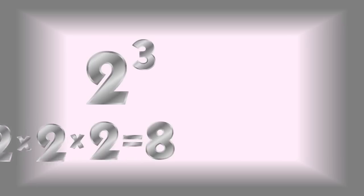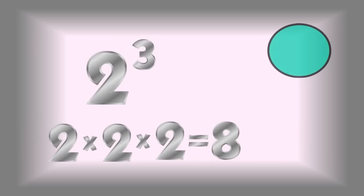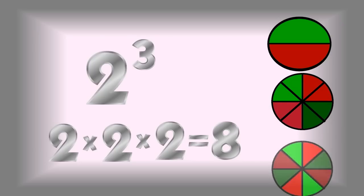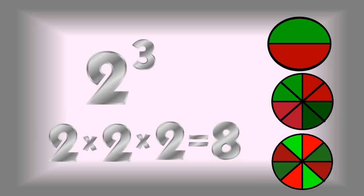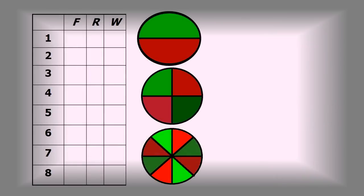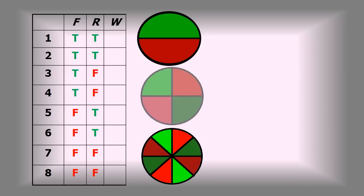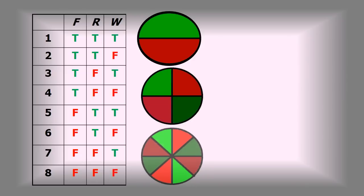I need a larger truth table here. Since I have three propositional variables, I need an eight-row truth table. I'll go half-on, half-off for the first column — four on, four off — then half of that for the next, and eventually down to eighths for the last. Here's what we do: for the F column, four on, four off; then switch to two-on, two-off for R; then one-on, one-off for W. I've set up my table with all propositions assigned every possible combination of trues and falses.